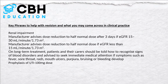Renal impairment is one of the key take-home messages. The manufacturer advises a dose reduction to half the normal dose after three days if the eGFR is between 15 and 50 ml per minute, and a dose reduction to half the normal dose if the eGFR is less than 15 ml per minute. This is something to look out for when dispensing, when prescribed by a GP, or when conducting an audit.